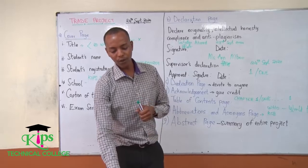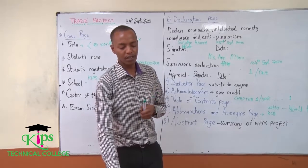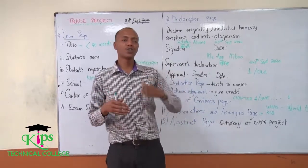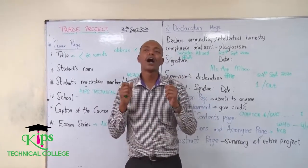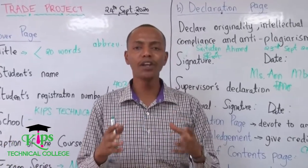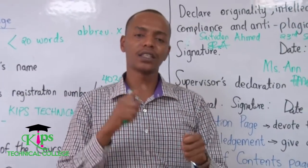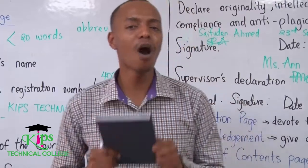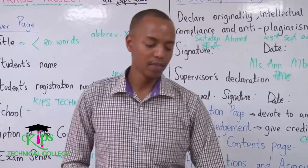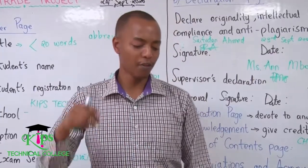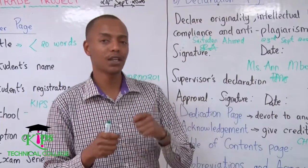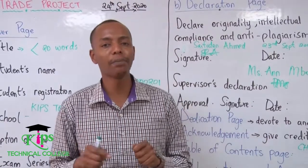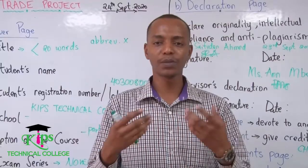With that we can conclude our class. Next time we'll talk about how to present the chapters — chapter 1, 2, 3, all the way to 5. We'll also discuss how to bind your project. For our level, all projects must be spirally bound, as compared to the book-bound format used for master's and PhD students. Thank you and have a great time — let's meet next time.